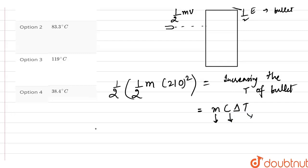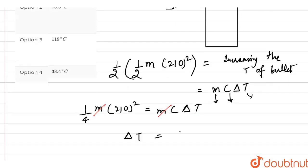So this comes out to be 1/4 m into 210 square, this is equal to mc delta T. Now removing mass from this equation we get delta T equal to 210 square divided by 4 into the specific heat is given to be 0.030.